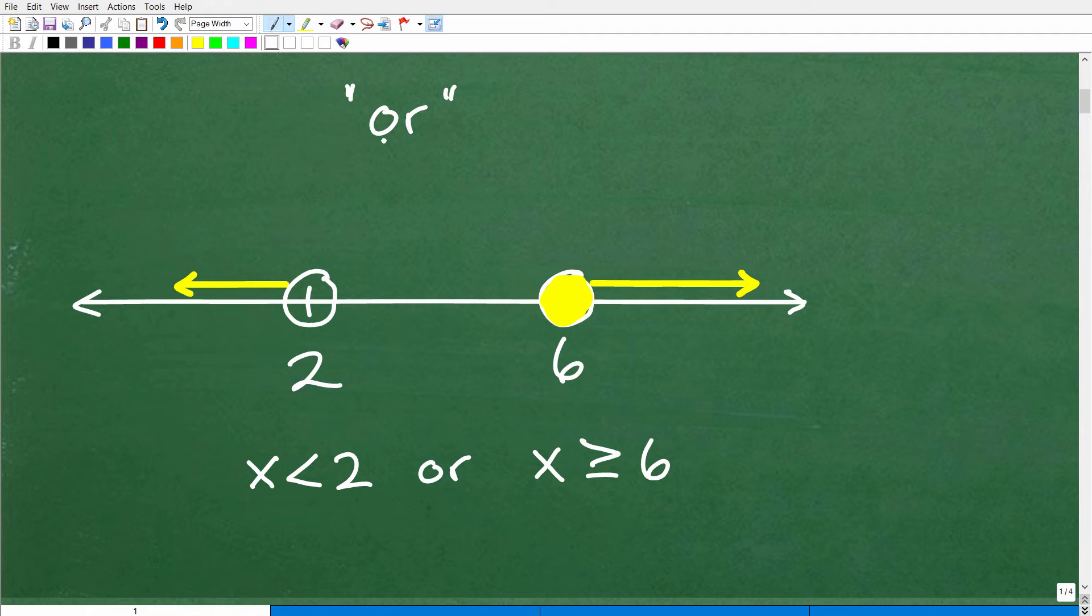So, the graph of an or situation will always look like this. So, when you see the word or, you already know your graph is going to look like oars, something like this. It's going to be separated.